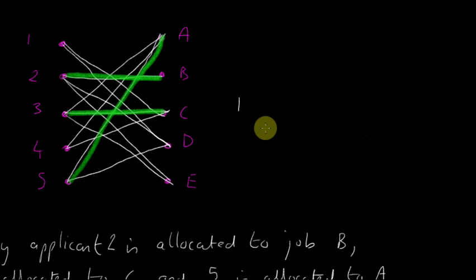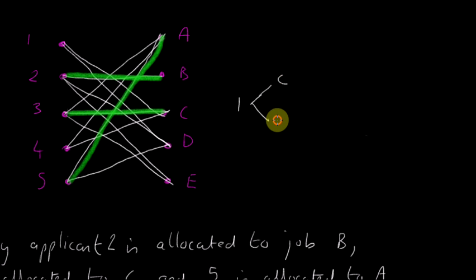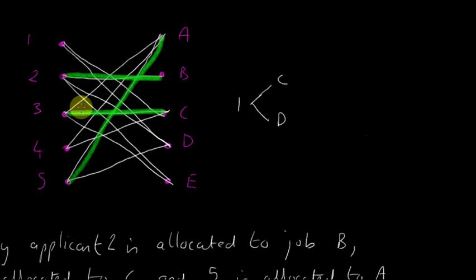Let's start from node 1. From 1 you can go to C and you can go to D, so we write two different paths from there. Let's go from C first: we go 1 to C, and C has a matching line from it, which we denote as a double line.